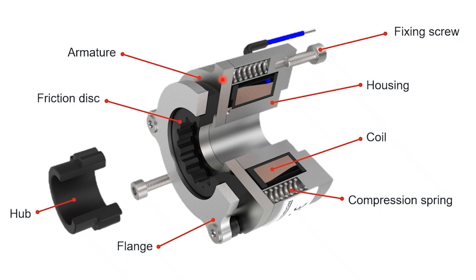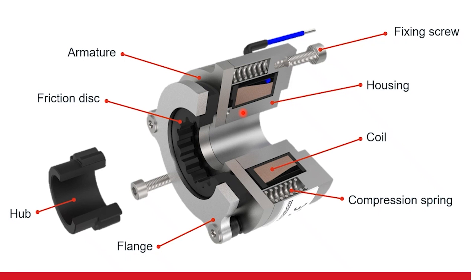Then we have the armature plate, which is behind the friction disk and the flange. The armature plate moves forwards and backwards depending on the location of the springs. These are called compression springs, and they are compressed by the electromagnetic forces generated by the coil. The coil is a cylindrical donut-type component that goes right around the brake and is used in electromagnetic force generation. The last part is the housing of the brake itself, which brings all of the components together to make the stator of the brake.